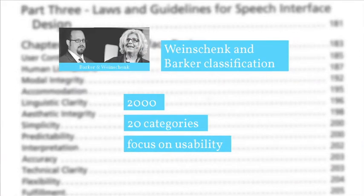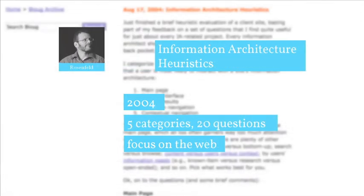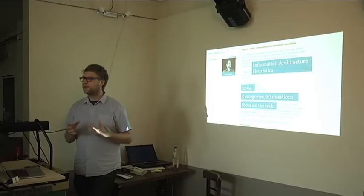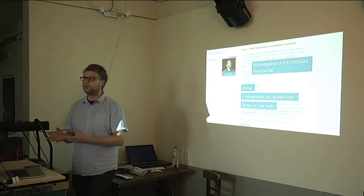Then some others: Dean Barker and Susan Waischenk, in 2000, wrote a book about speech analysis, and within that book they defined 20 really useful categories with a focus on usability. In 2004, there was Lou Rosenfeld, and on his blog he mentioned some heuristics that he used when he evaluated websites. You always have to think about the timeframe of when somebody defines some heuristics or checklists — within the time of 2004 when the web was different than ten years later or ten years before then.